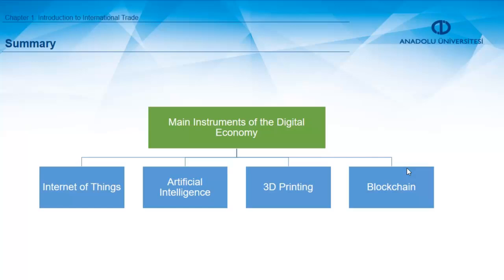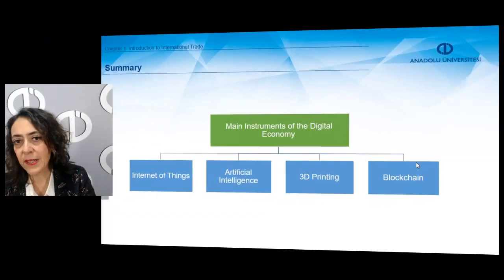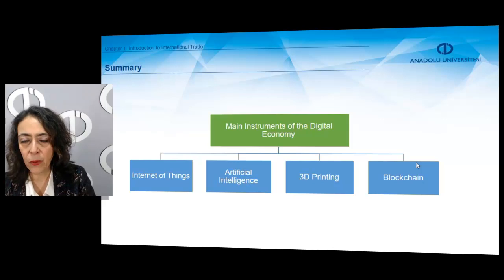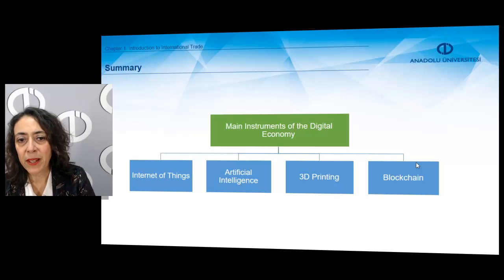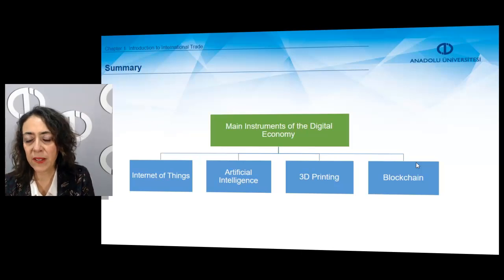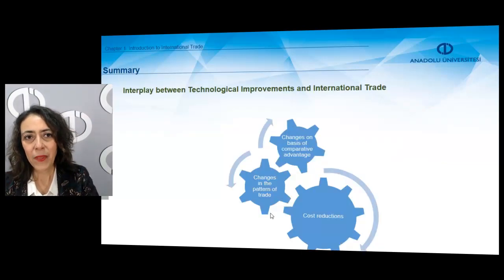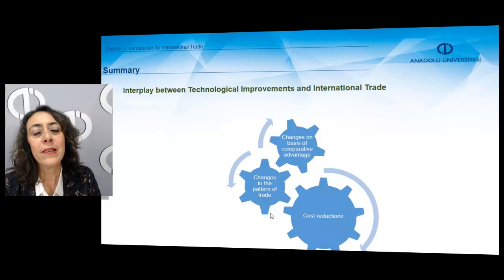As you see on our slide, there are four main instruments of the digital economy today. The first one is the Internet of Things, the second is Artificial Intelligence, the third is 3D printing, and the last instrument is Blockchain. We give definitions about these main instruments and discuss their effects on international trade.